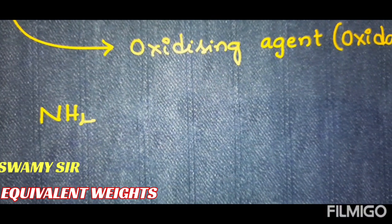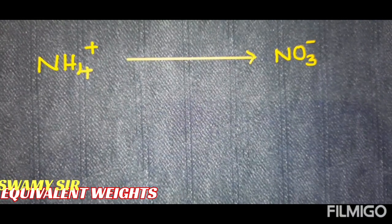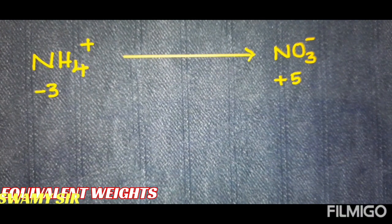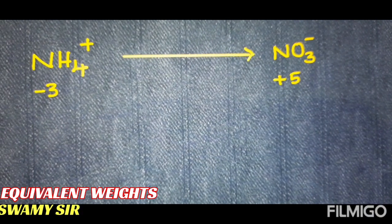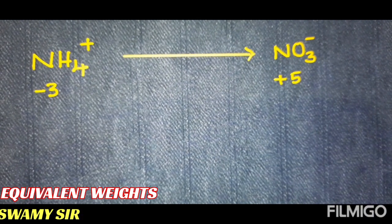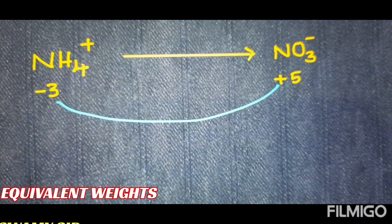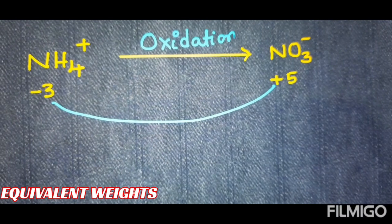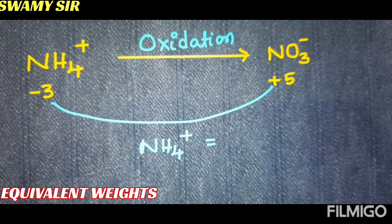NH₄⁺, in a given suitable medium, will change into NO₃⁻. Here, the nitrogen oxidation state is -3, and in the product the nitrogen oxidation state is +5. So -3 changes into +5 — there is an increase in oxidation number. So this reaction is called oxidation, and NH₄⁺ is called a reductant.